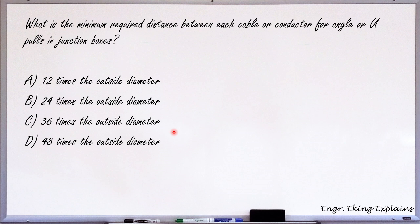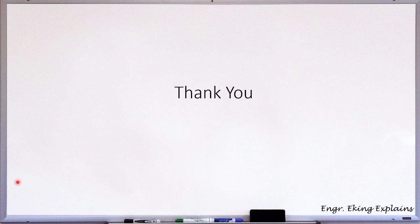so what is the minimum required distance between each cable or conductor for angle u-pulls in the junction box? Okay, so the correct answer is letter C, 36 times the outside diameter. Okay, so that will be all for this evening. So I hope you learn something on our discussion.